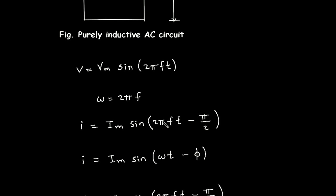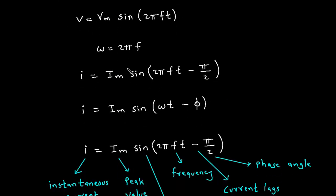So we can either write 2πf or ω, and here this will be minus π/2. This is minus π/2 because the current lags voltage by π/2, or 90 degrees. Comparing with the general current equation I equal to Im sin(ωt − φ), where φ is the phase angle, we can see the phase angle here is π/2, and ω is the angular frequency 2πf.